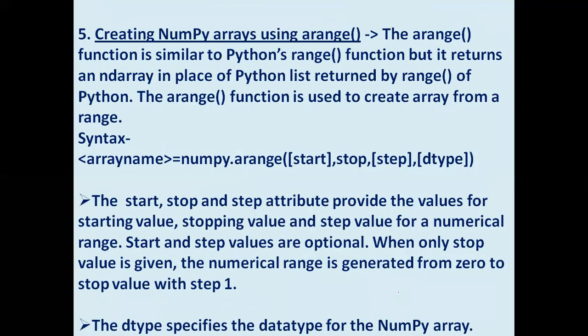Next way is creating NumPy arrays using the arange function. The arange function is similar to Python's range function, but it returns an ndarray instead of a Python list. The working and syntax of both are the same — the key difference is that range creates a Python list while arange creates a NumPy array.